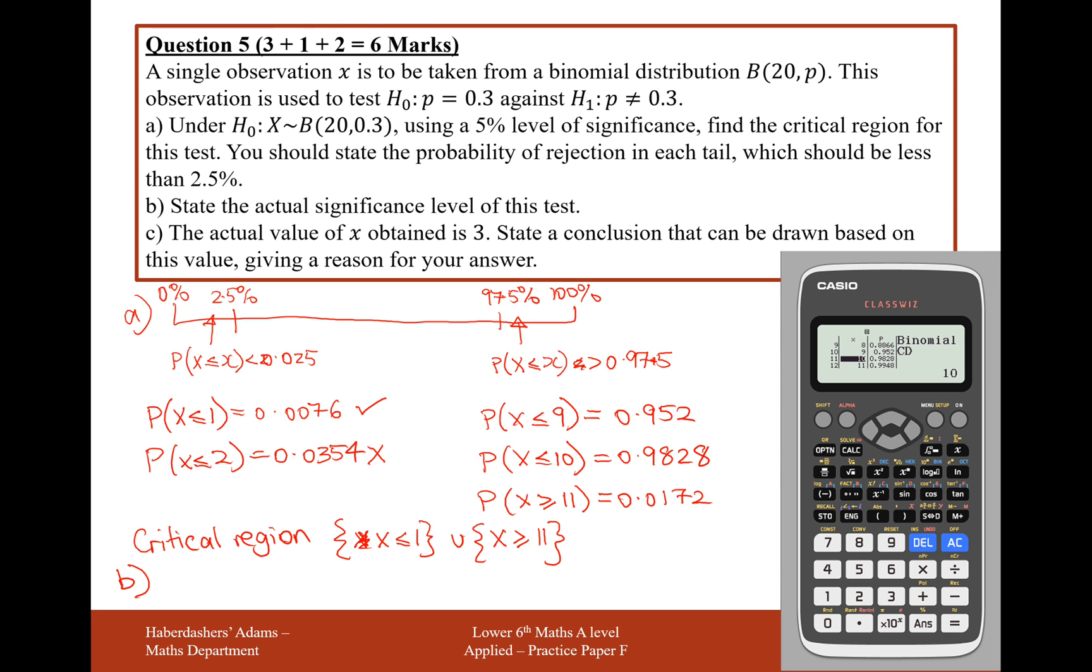Moving on to part B now. State the actual significance level of this test. Well, the significance level is going to be the probability of the lower tail and the probability of the upper tail, so 0.0076 plus 0.0172, and add them together here. You get 0.0247.